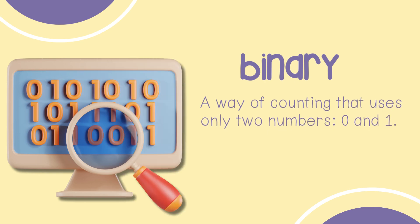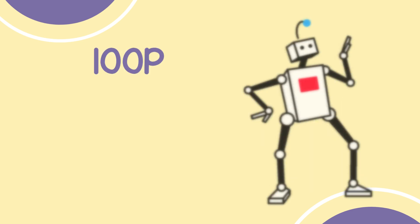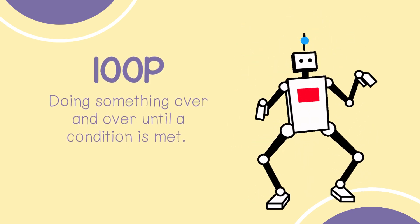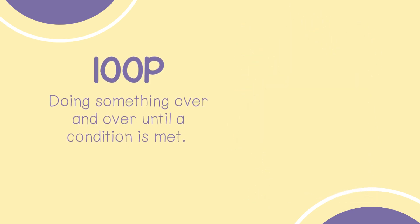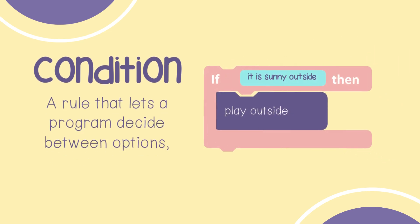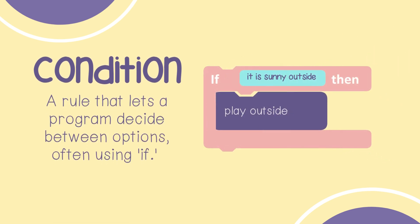Binary is a way of counting that uses only two numbers: zeros and ones. A loop is doing something over and over until a condition is met. Debug means finding and fixing mistakes in a program. A condition is a rule that lets a program decide between options, and it often uses if.